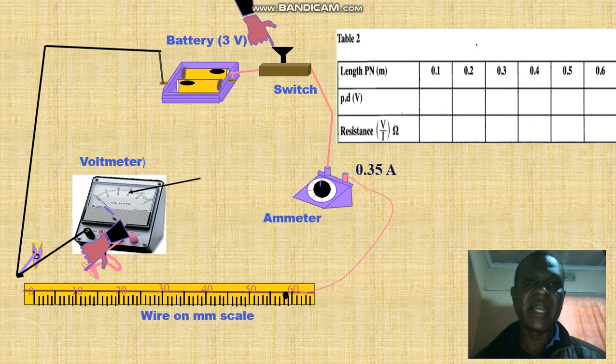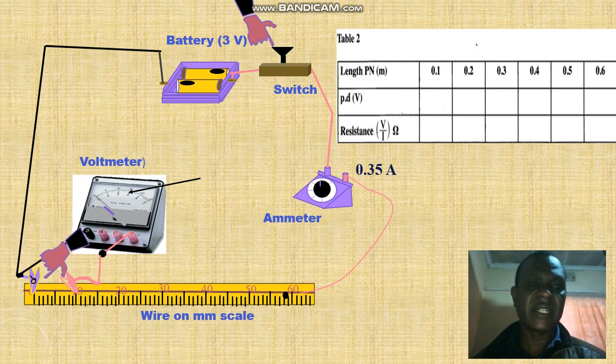Now we are here. We are going to start our experiment. We have the battery, we have the voltmeter and ammeter for measuring current, voltmeter for measuring voltages, and a wire L mounted on a millimeter scale and the clips. So we are going to first of all connect the wire to attend PN.